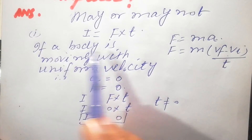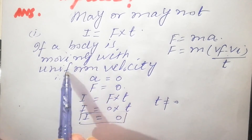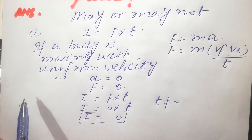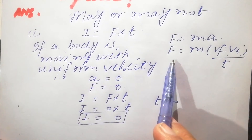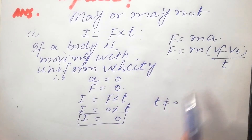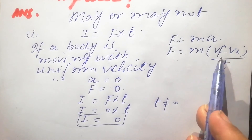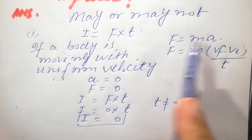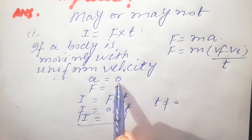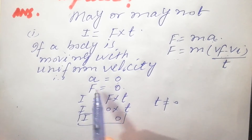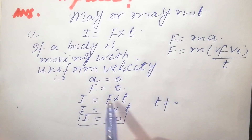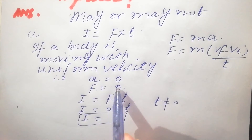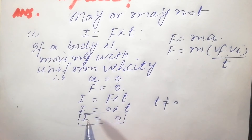In the first case, if a body is moving with uniform velocity, there is no change in velocity, so acceleration is 0. And if acceleration is 0, then since impulse is equal to F into t and F is 0, it means impulse is equal to 0.